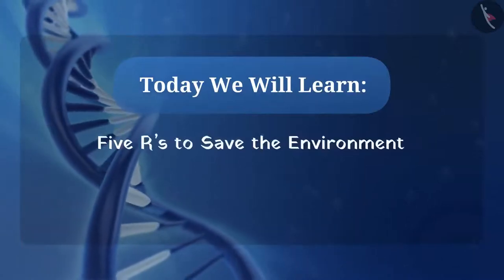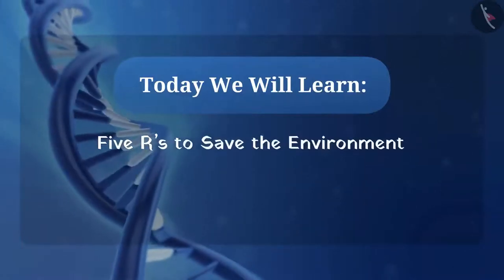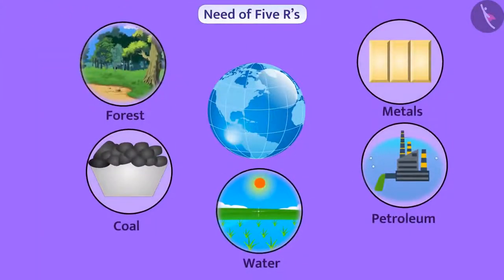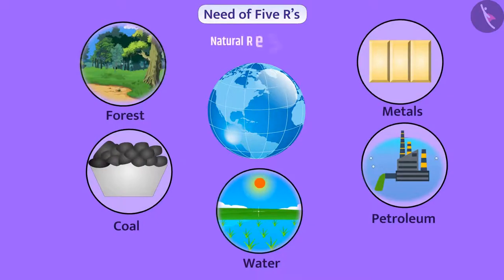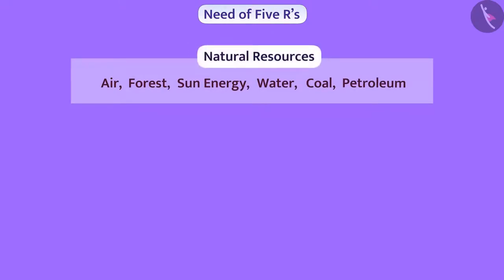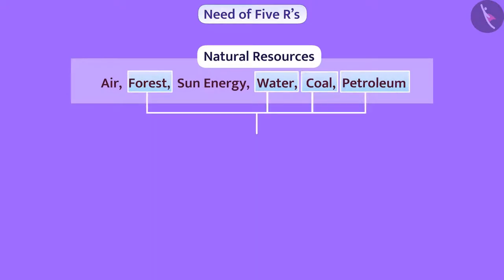We obtain various things from the environment for our development. All the things we need from the environment are called natural resources. Air, forest, sun energy, water, coal, petroleum, etc. are natural resources. Resources like forest, water, coal, and petroleum cannot be used again once they are used; therefore these resources are limited.